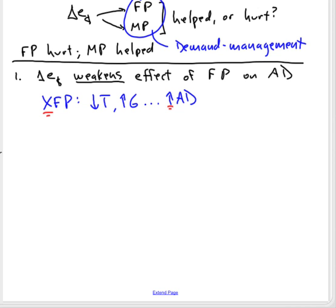Because the tax cut will increase disposable income, increase consumption. G rises, C rises, and we get an increase in aggregate demand.